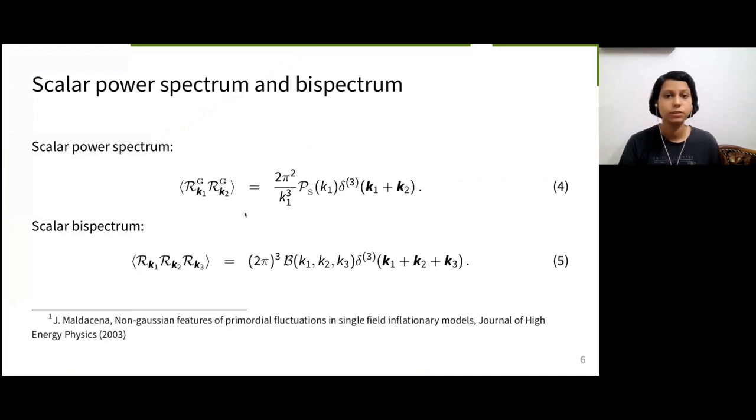Till now, we have dealt with Gaussian curvature perturbation RK. After this slide, we shall refer this Gaussian curvature perturbation as RKG and curvature perturbation with non-Gaussian corrections as RK. As before, equation 4 shows the Gaussian power spectrum, which is the two-point correlation of RKG.